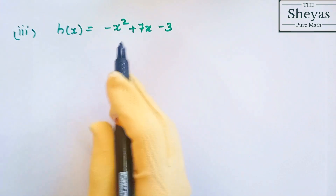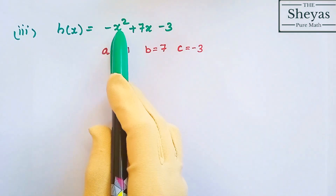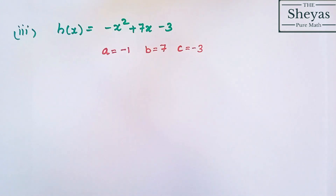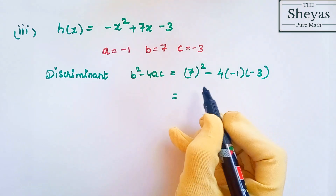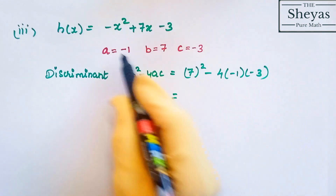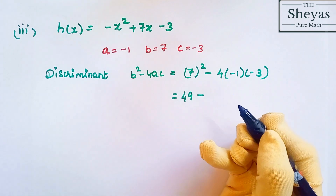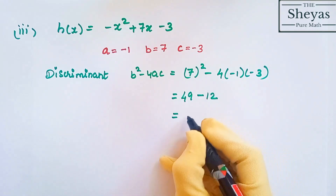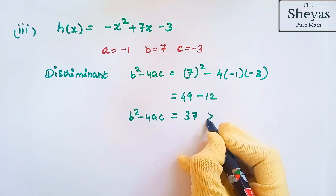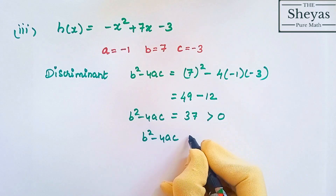The third problem: h of x is equal to minus x squared plus 7x minus 3. Here a is equal to minus 1, b is equal to 7, and c is equal to minus 3. The discriminant b squared minus 4ac equals 7 squared minus 4 into minus 1 into minus 3. 7 squared is 49, and 49 minus 12 equals 37. So b squared minus 4ac is equal to 37, which is greater than 0.